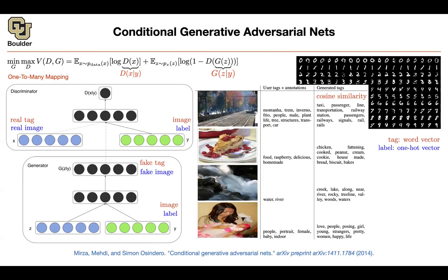The other application is image tagging. Somebody gives us an image and we want to put some tags on that — we want to generate tags for our images. For example, given an image we want to generate tags like taxi, passenger, line, transportation, station. This is a one-to-many mapping. Somebody gives us the image of food and we want to say this is chicken, cooked, cookie, house-made, etc. Those are the generated tags.